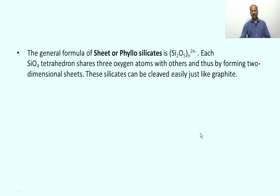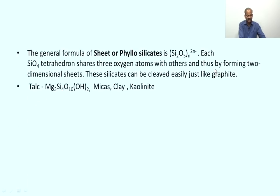The next category is sheet silicates, in which every unit's three oxygen atoms are shared with neighboring units. Their formula is [Si₂O₅]ₙ²ⁿ⁻. In this case, three oxygen atoms of every unit are shared, forming two-dimensional sheet silicates. Important examples include talc, mica, clay, and kaolinite — these are important sheet silicates.